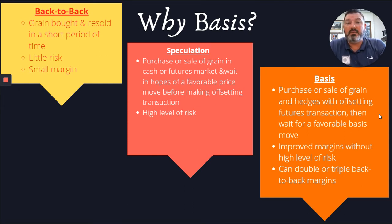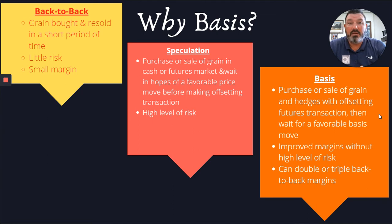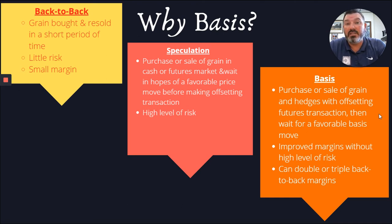I could also speculate — purchase grain or cash futures in a market and wait in hopes for a favorable price movement before making the offsetting transaction. The problem is that's a high level of risk, because I may be buying at the high of the market and the price may go down significantly. I would have to hold on to that contract or grain for quite a long time before having the opportunity to sell it at a profitable mark again, or I would have to take a loss. That's what's called speculation.